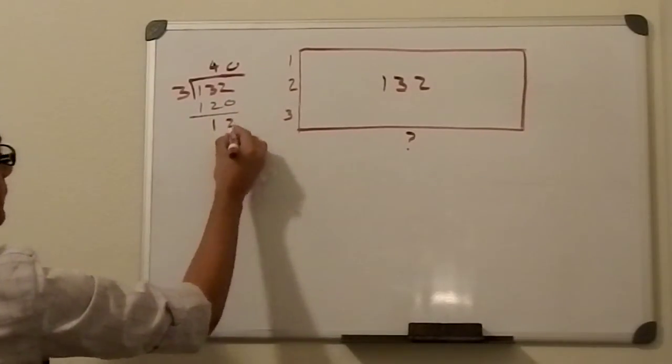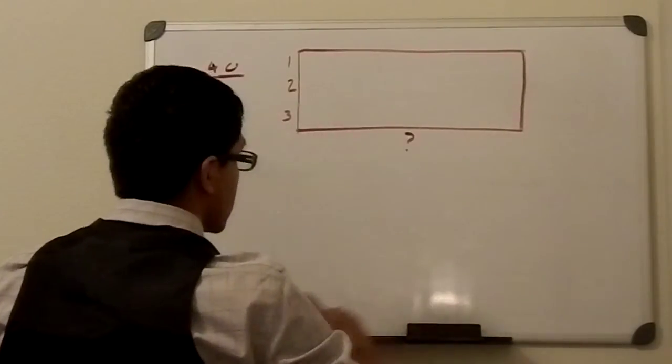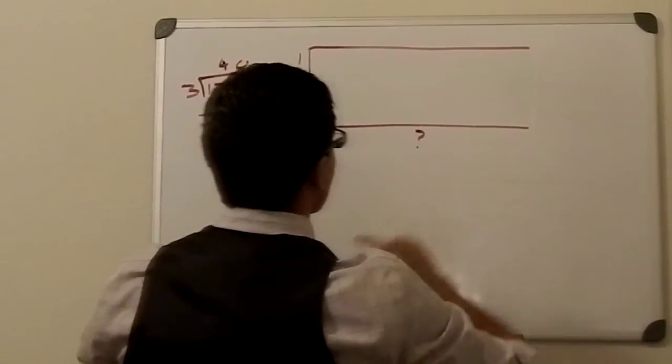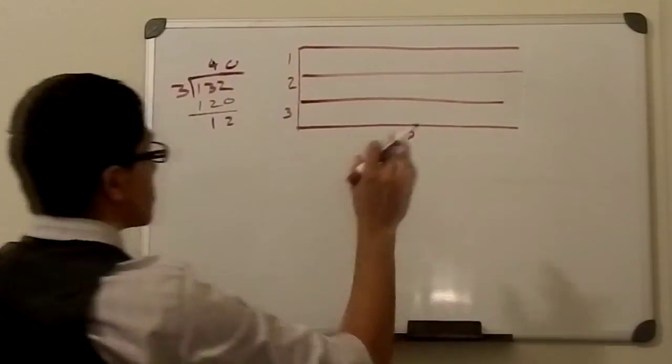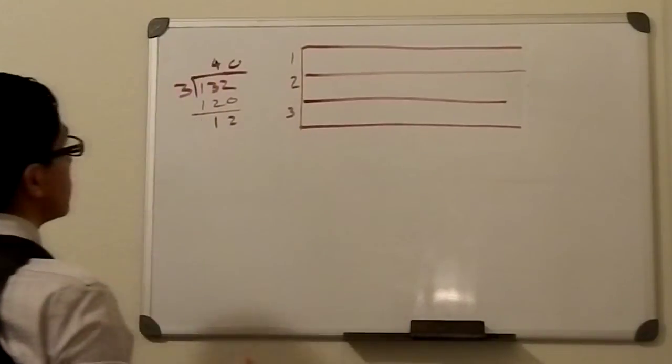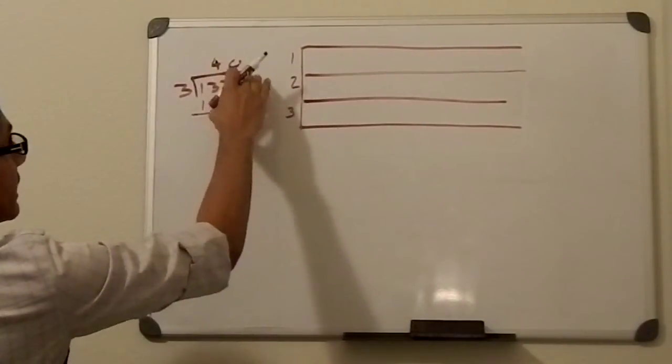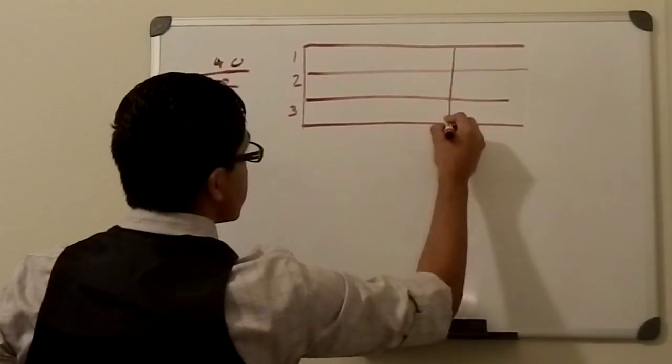We get 12. So here we have our three groups, right? We know it goes in at least 40 times, so let's say that right there is 40, 40.